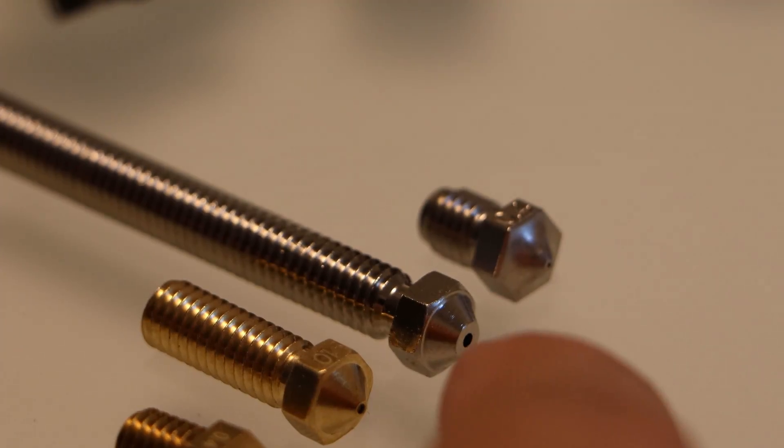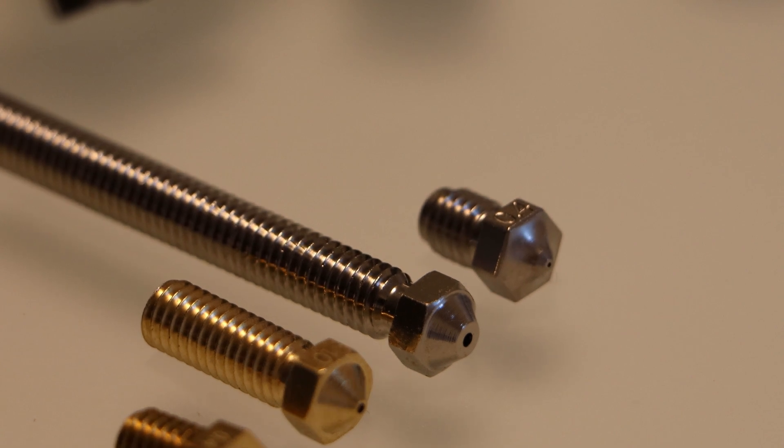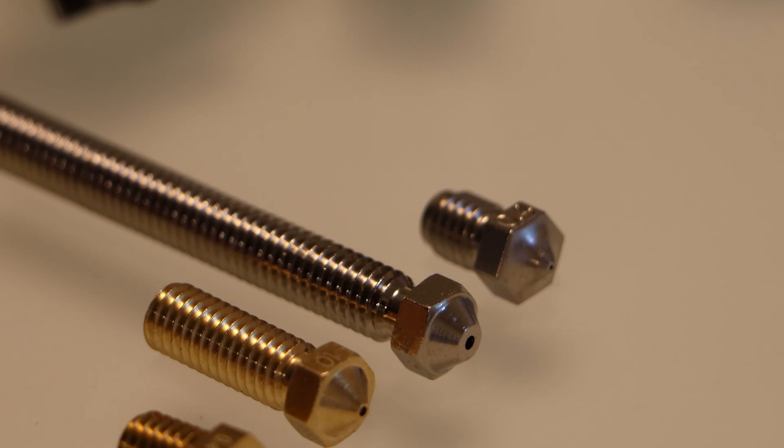These two copper nozzles on the right don't look like they're made out of copper because they've been nickel plated. It's common to plate nozzles to give them increased wear resistance and increased corrosion resistance, especially with copper, because that tends to oxidize in air.